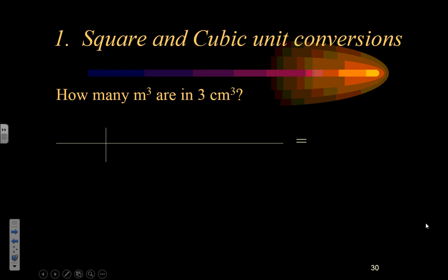We're going to follow the same process we always have. We're going to look at our target — it's asking us for meters cubed — then set up a workspace and put in our given. In this case, that would be 3 centimeters cubed. Now, a centimeter cubed is really a centimeter times a centimeter times a centimeter. And since I don't want centimeters, I'm going to try and get rid of them.